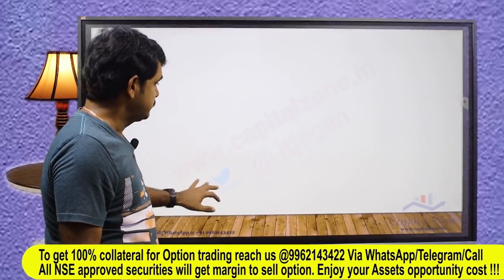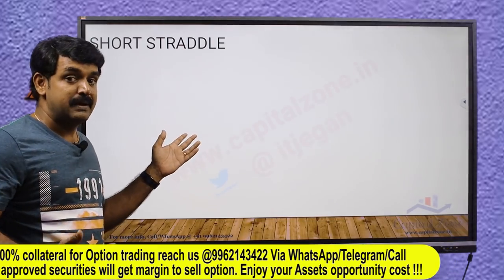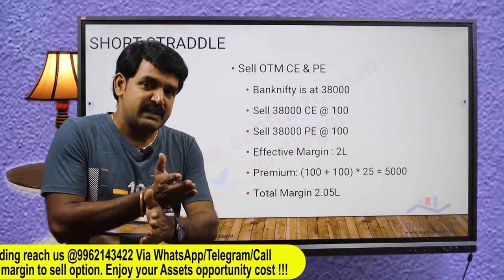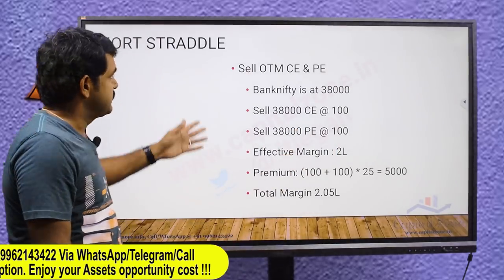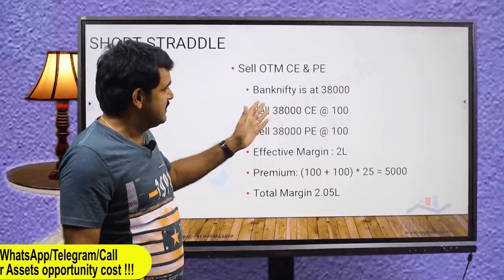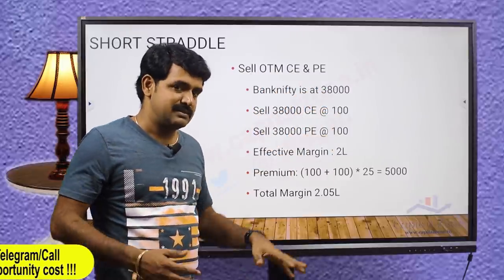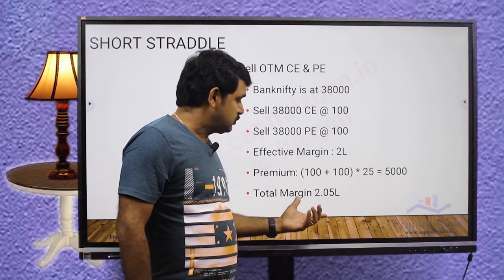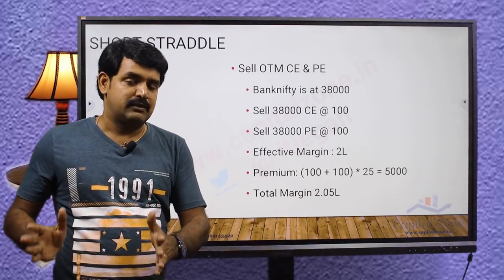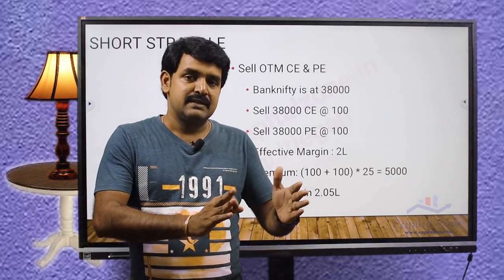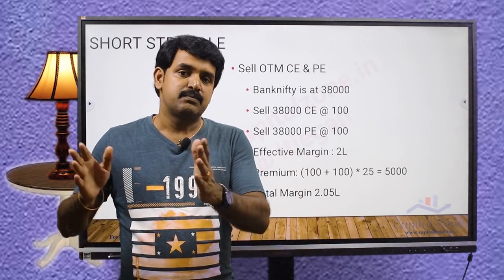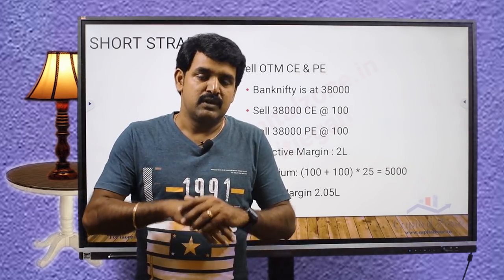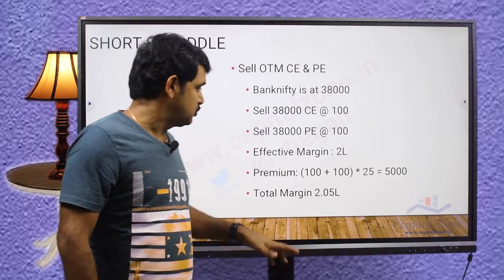I am comparing tight shortcuts with the short straddle because it is closest to the short straddle - we are going just in the money, not deep in the money. For example, Bank Nifty is at 38,000. Selling ATM call and put at 100 rupees each. Let's assume it's expiring - effective margin is 2 lakhs. Premium collected is 5,000, so total margin is 2 lakhs 5,000. For intraday, you need to pay today and square off today.